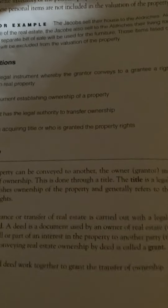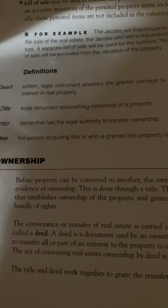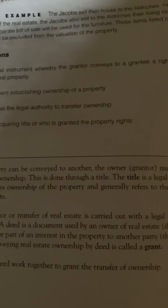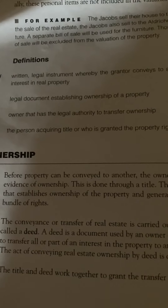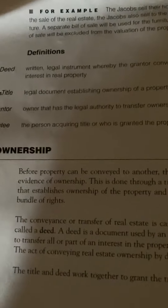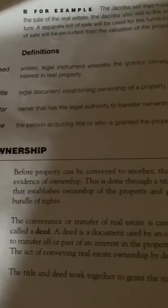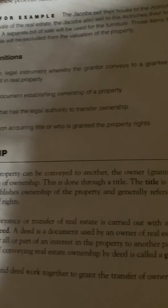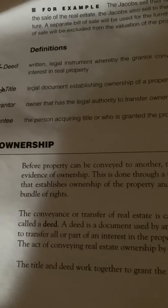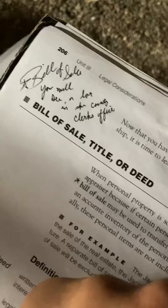Before property can be conveyed to another, the owner — the grantor — must provide evidence of ownership. This is done through a title. The title is a legal document that establishes ownership of the property and generally refers to the complete bundle of rights. The conveyance or transfer of real estate is carried out with a legal instrument called a deed. A deed is a document used by an owner of real estate, the grantor, to transfer all or part of an interest in the property to another party — the grantee. The act of conveying real estate ownership by deed is called a grant. The title and deed work together to grant the transfer of ownership.